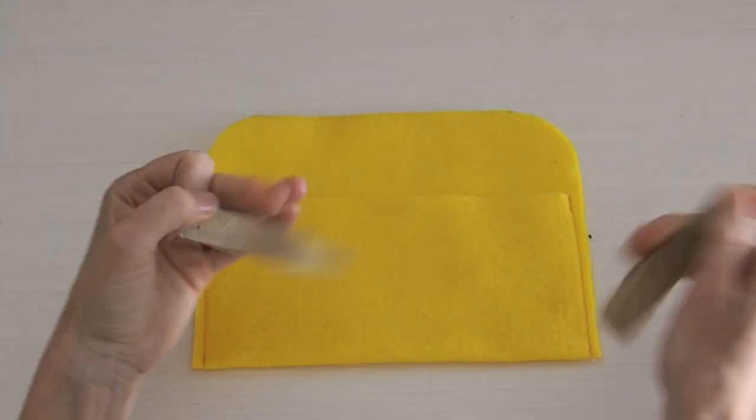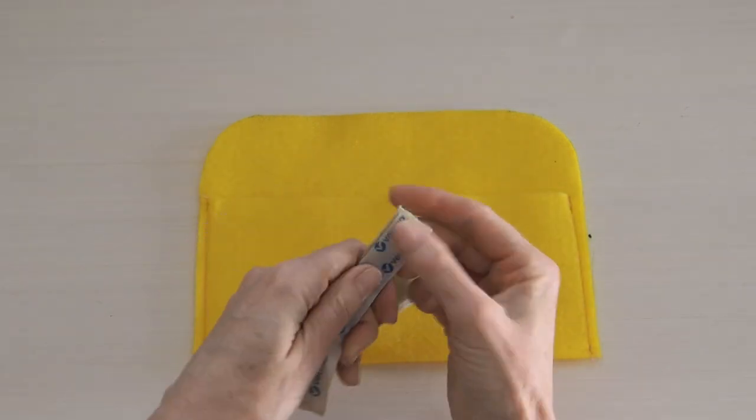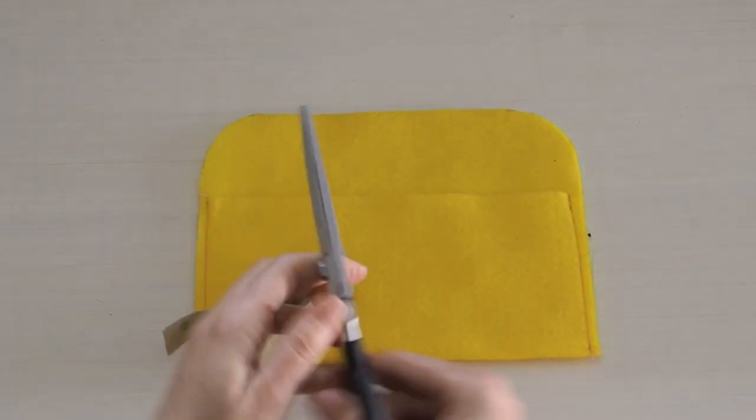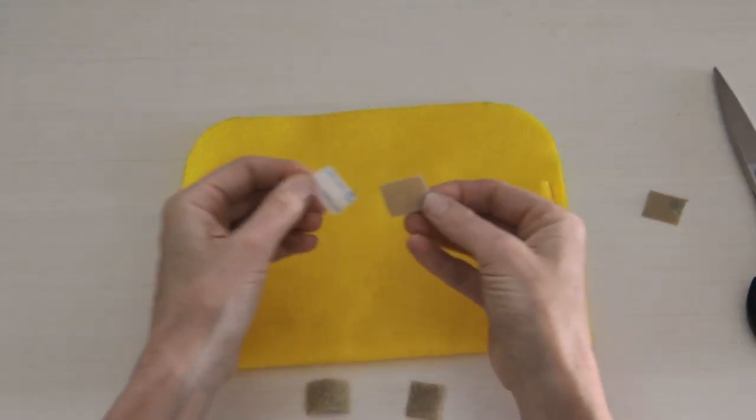I did use the sticky back velcro so I don't have to do any sewing. So I like to cut two little pieces. I cut mine one half to about one inch in size and then I put one on either side.